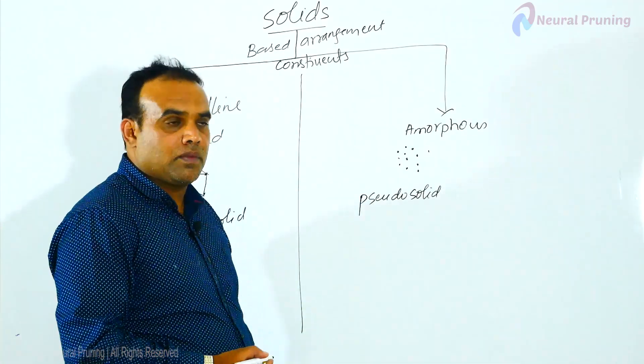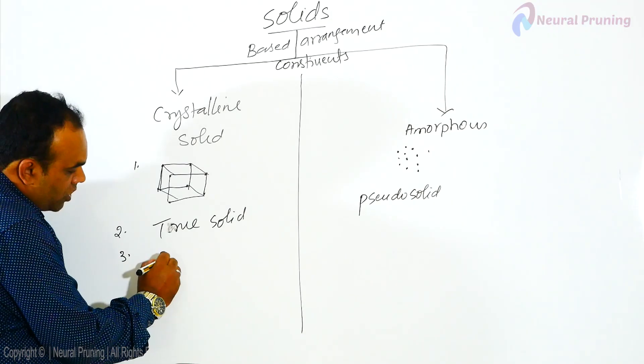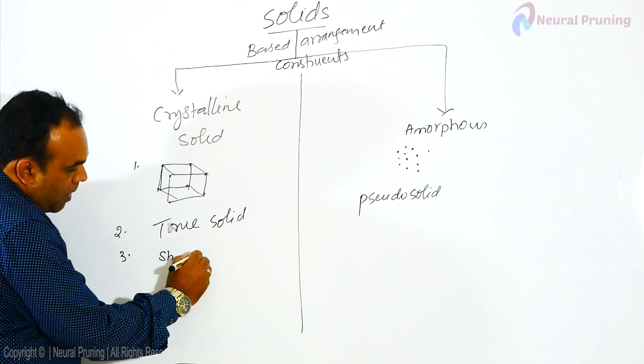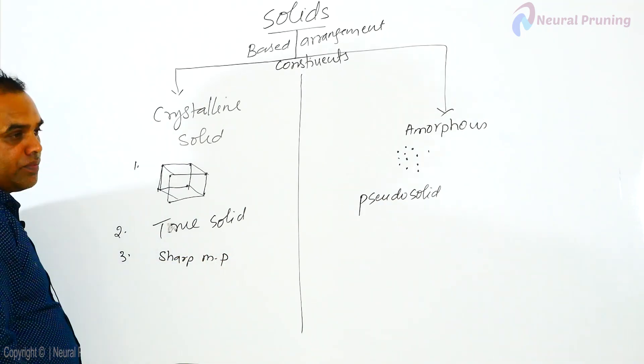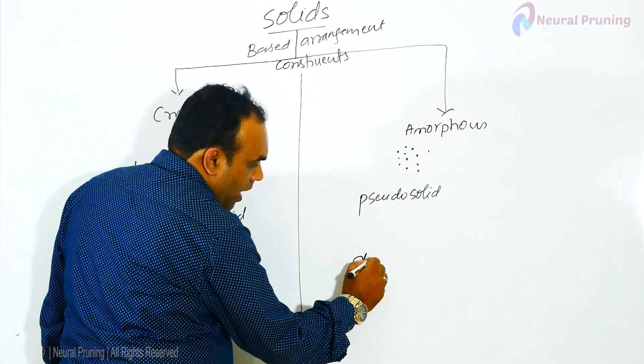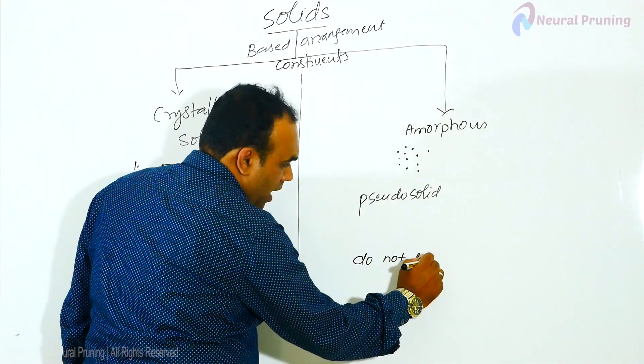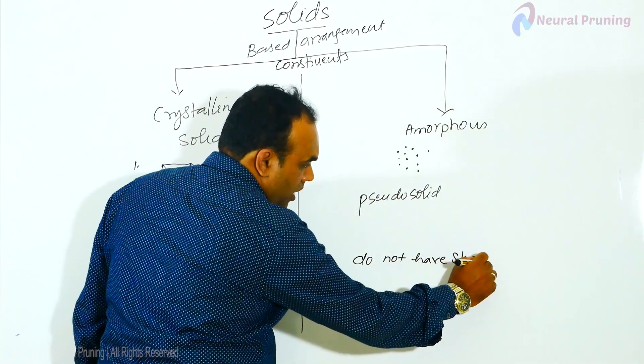Crystalline solids, third, they have sharp melting point. Amorphous do not have sharp melting point.